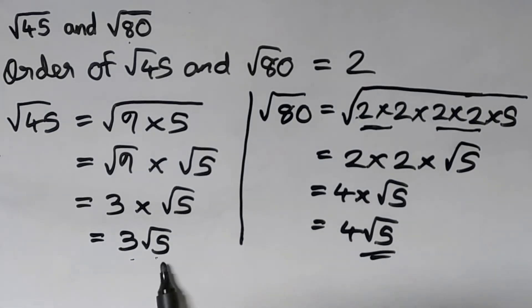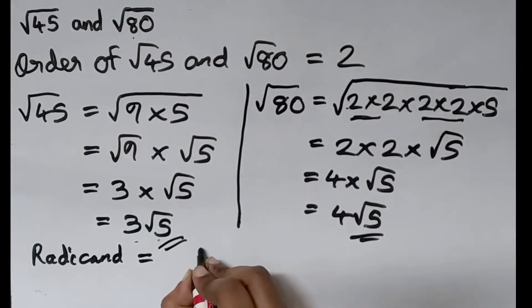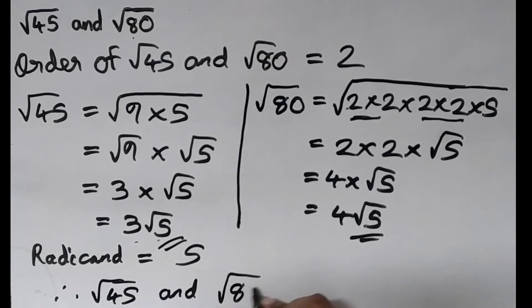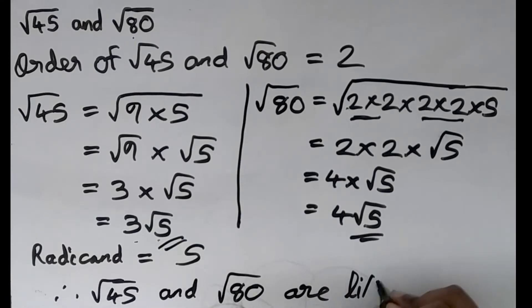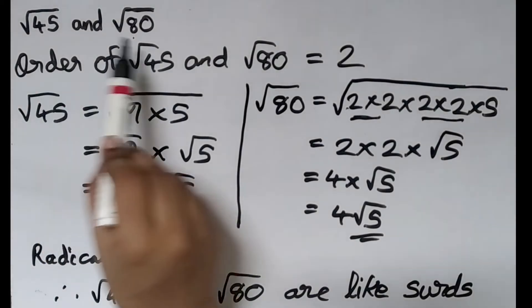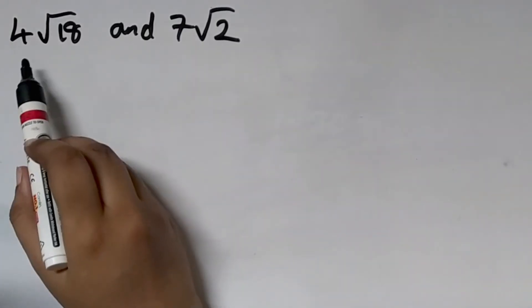The radicand of 3 root 5 is 5 and the radicand of 4 root 5 is also 5 — the radicand is equal to 5 for both. Therefore root 45 and root 80 are like surds or similar surds. The order of both surds is 2, which is the same, and the radicand of both surds is 5, which is also the same. So these two surds are like surds or similar surds.